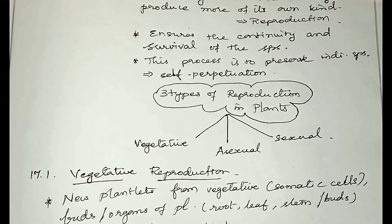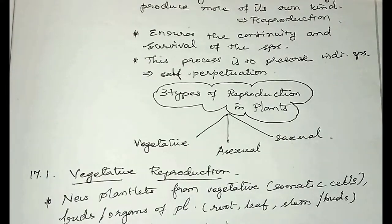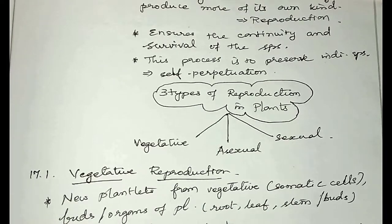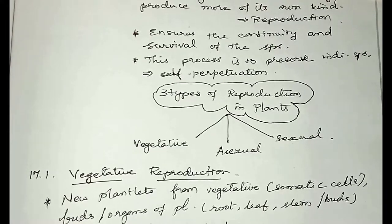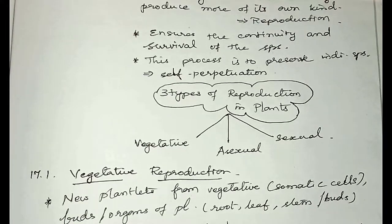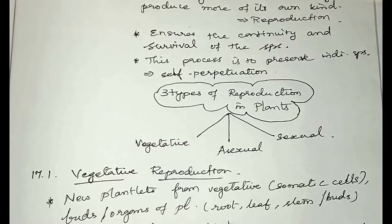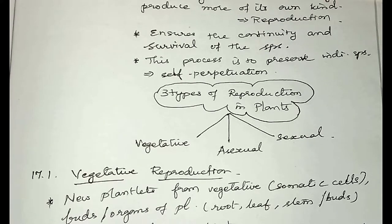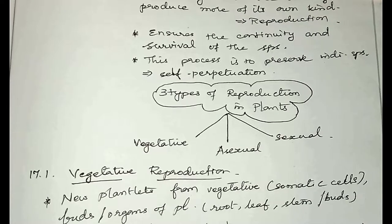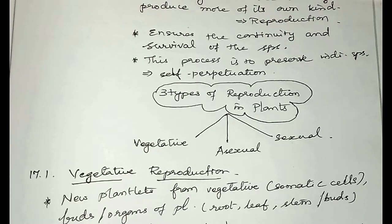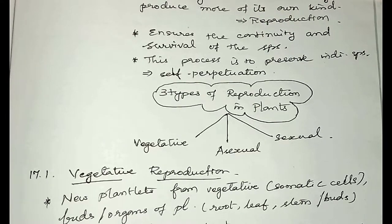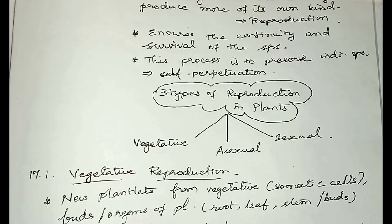In vegetative reproduction, there is no gamete formation and no gamete fusion takes place. The daughter plants are genetically identical among themselves as well as to their parents. Vegetative reproduction can take place through the leaves — for example, bryophyllum — through the stem, like in strawberry, roots like sweet potato, and bulbils.